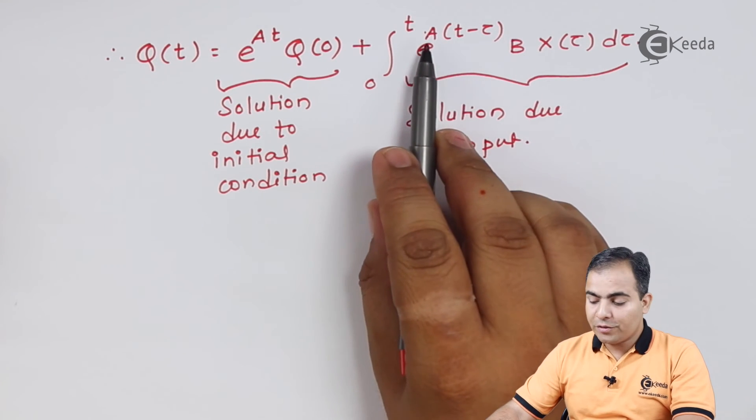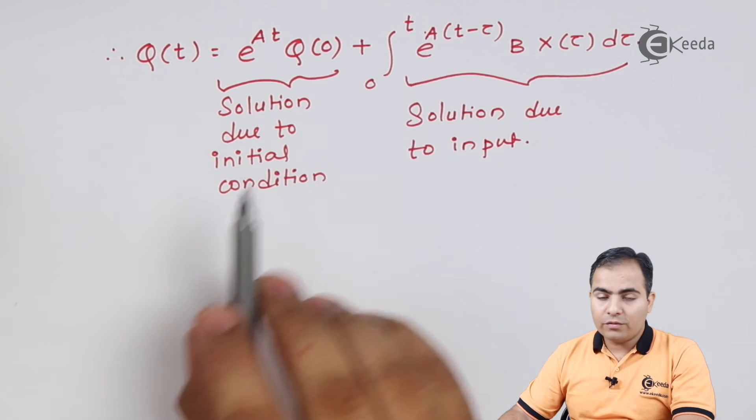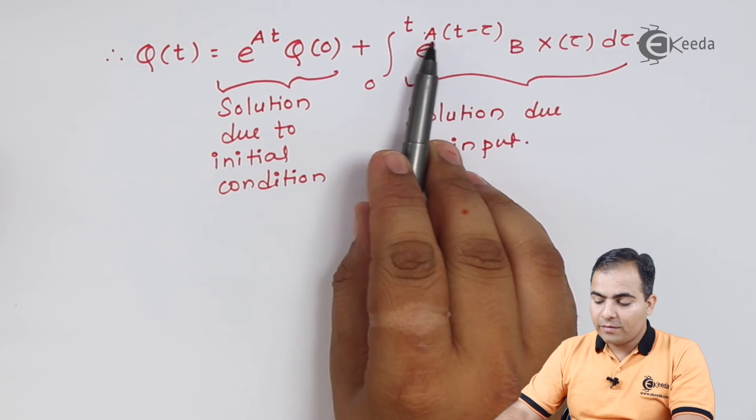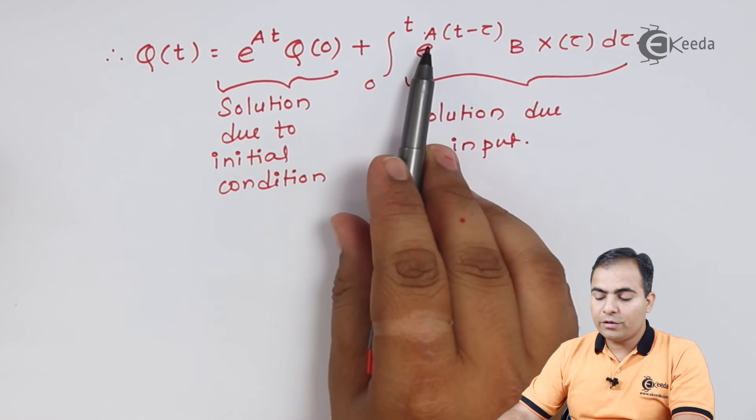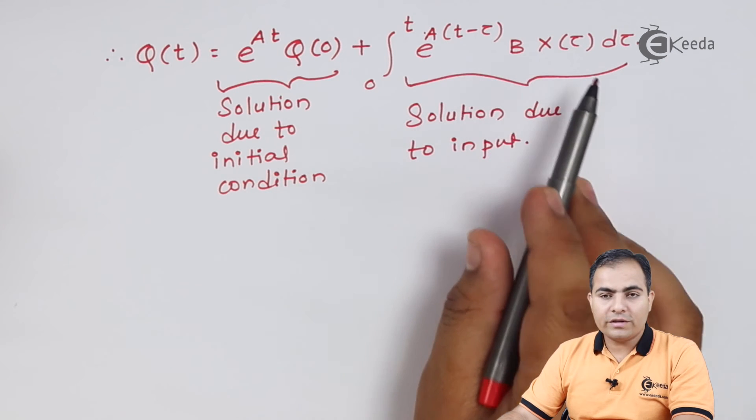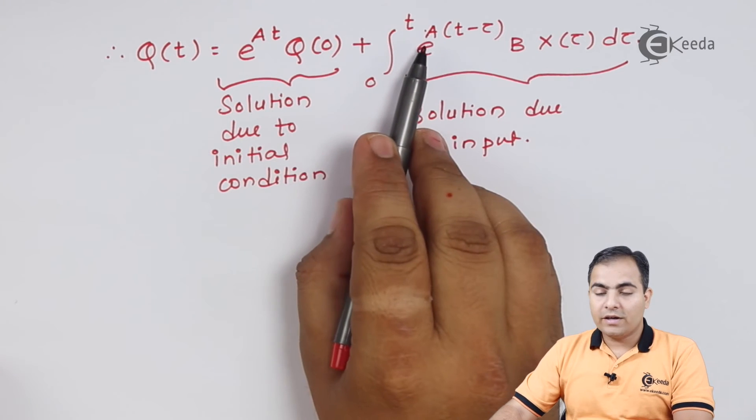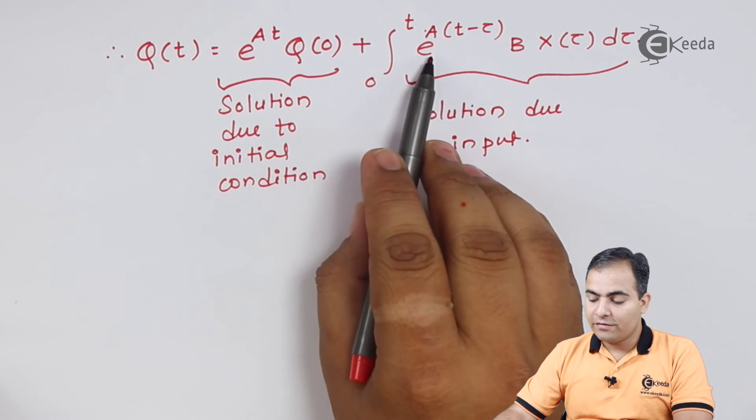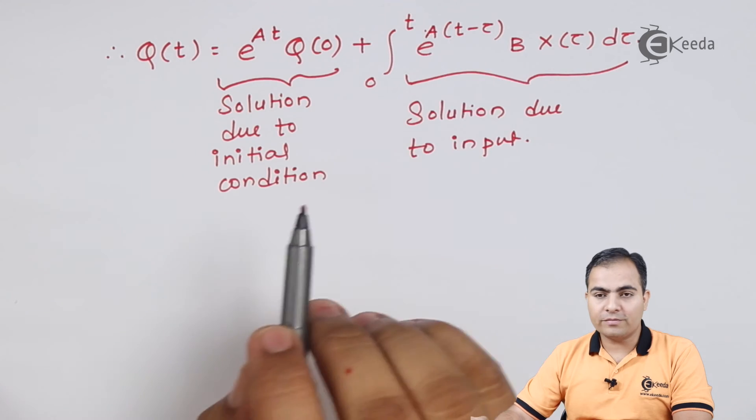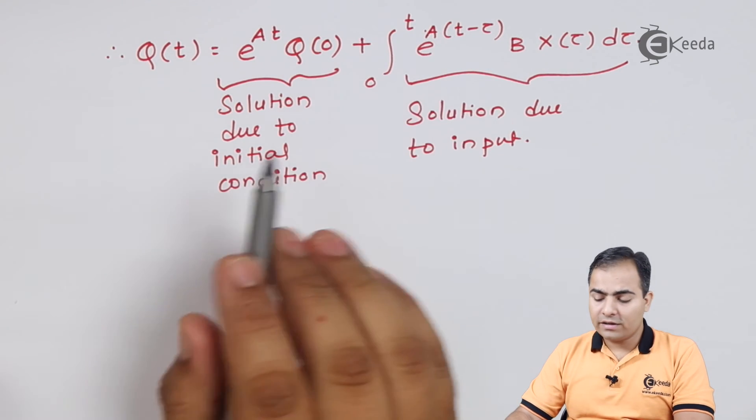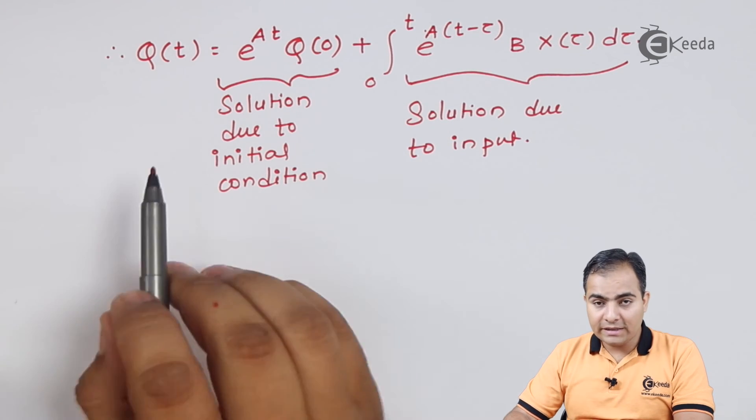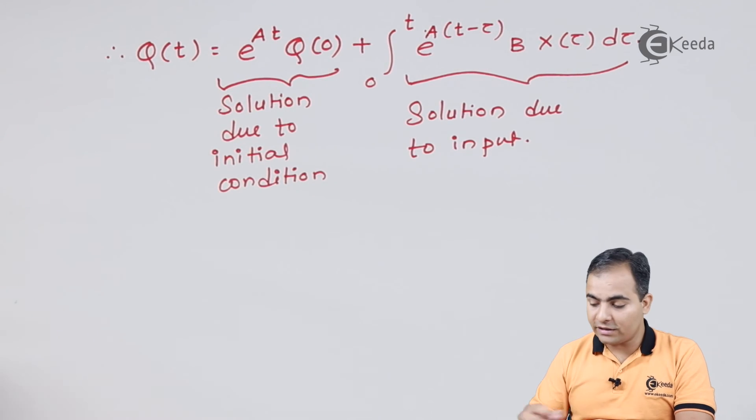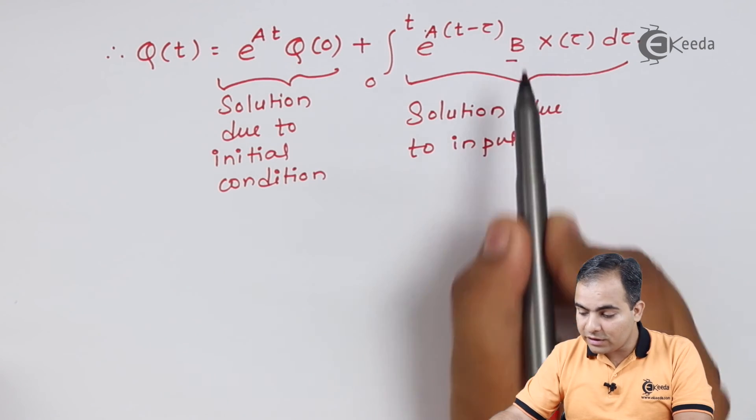From right hand side I am going to take A common from e to the power. From this bracket, we have e to the power A inside this bracket (t minus tau) B into x(tau) d tau. I have taken only A common from this right hand side part. So what we have got inside this integration, we have only e to the power A inside the bracket (t minus tau).